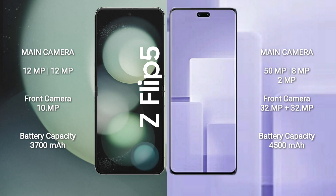Samsung Galaxy Z Flip 5 features a dual rear camera setup: 12MP plus 12MP, and a front camera of 10MP. Xiaomi CB3 features a triple rear camera setup: 50MP plus 8MP plus 2MP, and dual front cameras of 32MP plus 32MP.